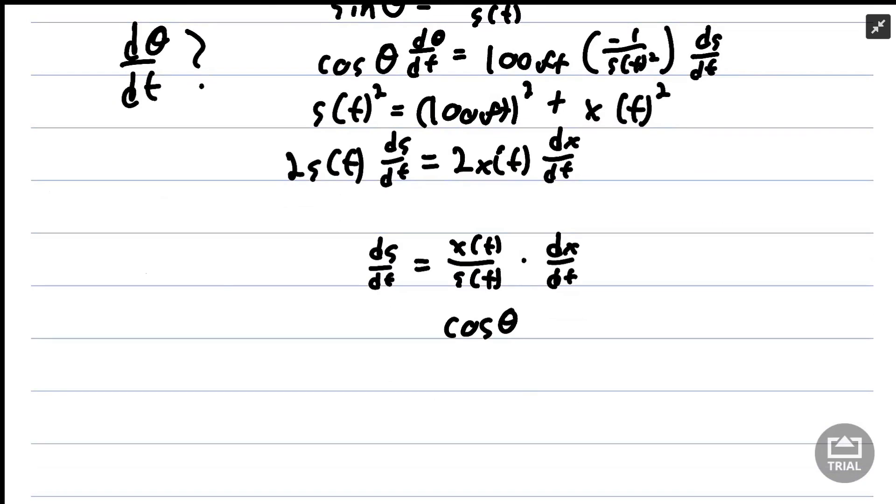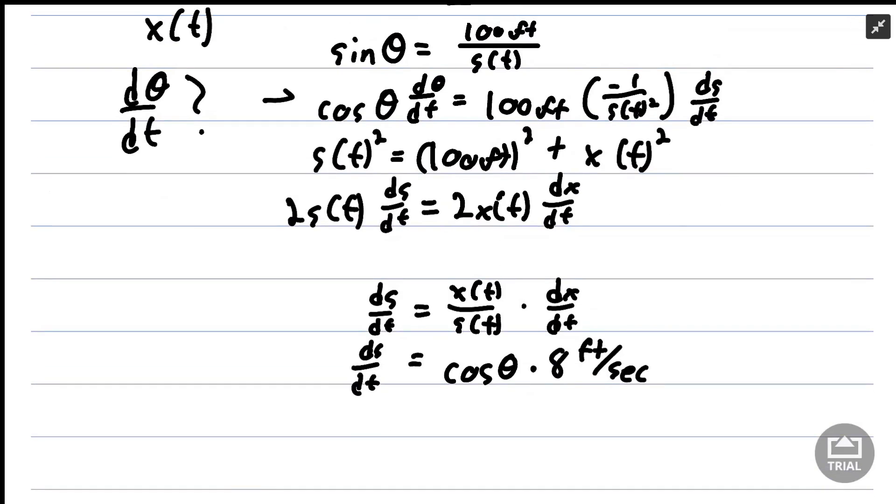So I'm going to rewrite that. You'll also notice that dx/dt is something we already know. This is the horizontal movement of the kite, which we know is 8 feet per second. Because of that, we have an expression for ds/dt that fits really nicely with the original equation.